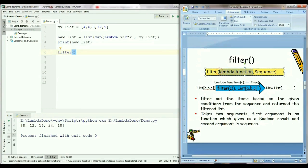First argument is a function which gives us a boolean result. So instead of doing some arithmetic operations like addition or multiplication, this function gives us the boolean result. This is what filter function is expecting from the first argument.